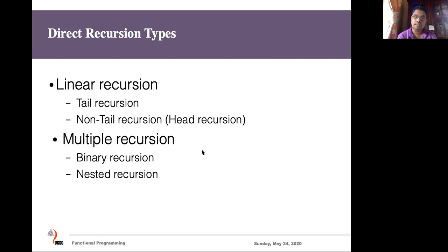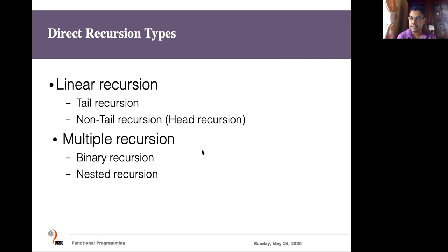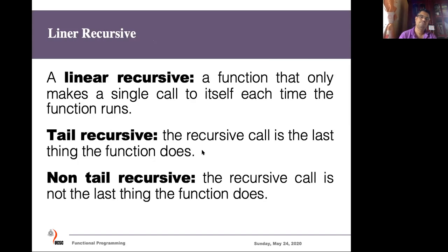Then we have multiple recursion, where we call the same function more than once within the body of the function. If we call the same function two times, we call it binary recursion. If we call the function within the argument of the same function, we call it nested recursion. The most popular type of recursive functions in functional programming is linear recursive functions, among which most are tail recursive, though non-tail recursive functions exist as well.